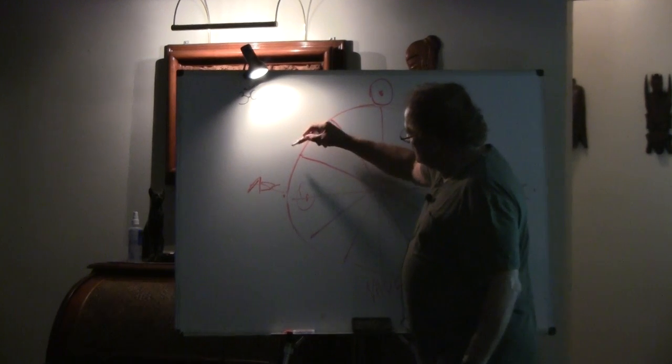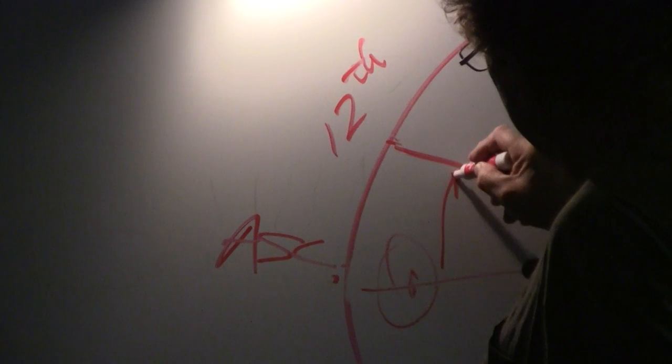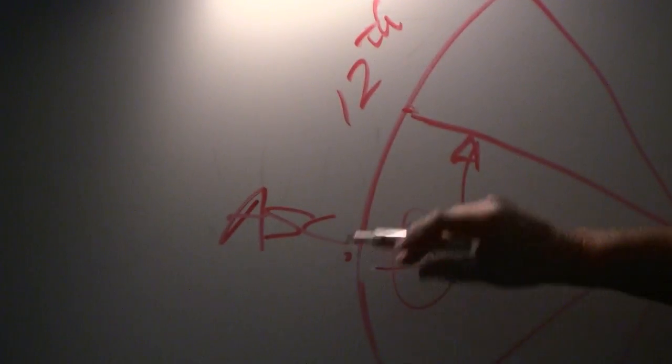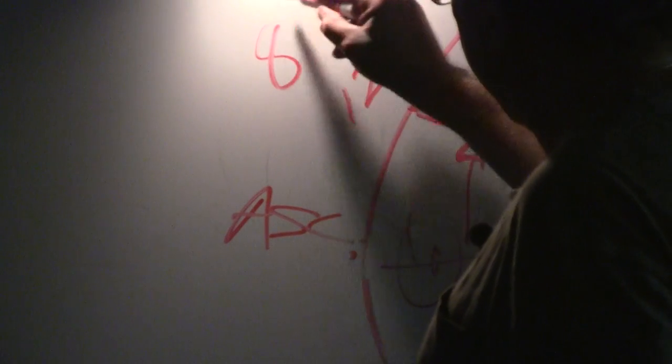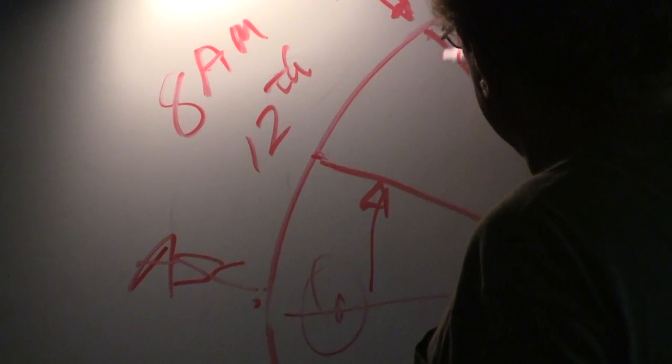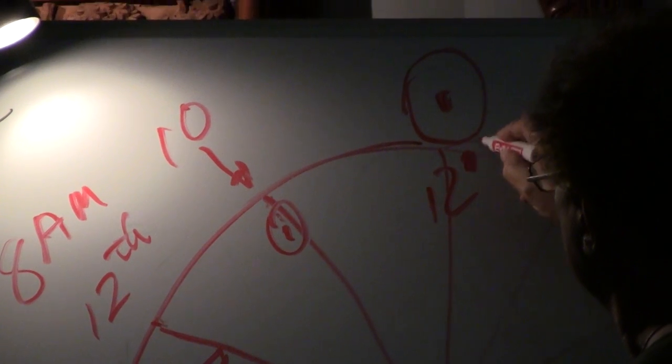Two hours later, it's going to be at the 12th house cusp, roughly. It's going to take two hours to move up here. And then two more hours. So let's say 6 o'clock, at 8 a.m., it's going to be about there. And then about 10 a.m., it's going to be right here. At 12 o'clock, it's going to be up here, at 12 noon.